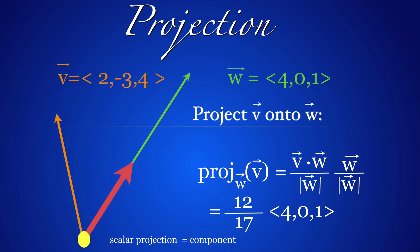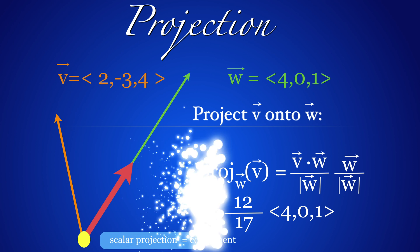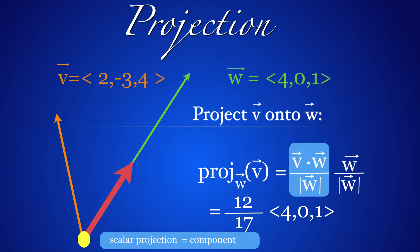Also useful is the vector projection. When projecting V onto W, we get the vector parallel to W, and its signed length is the scalar projection or component.